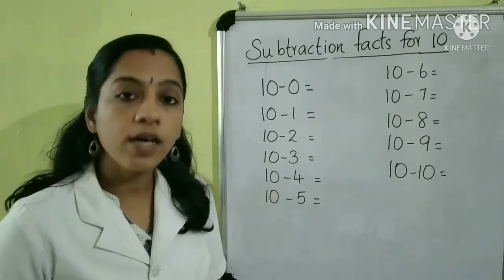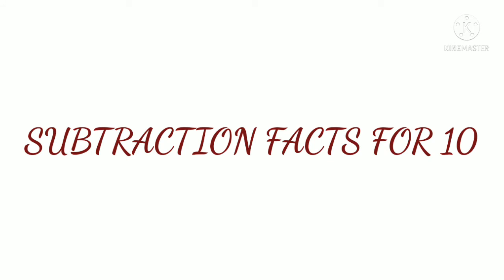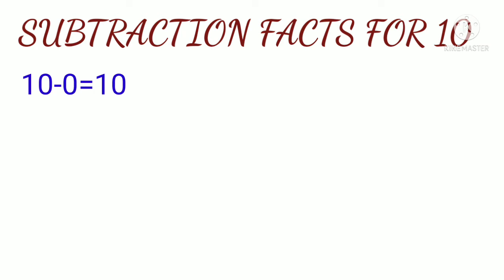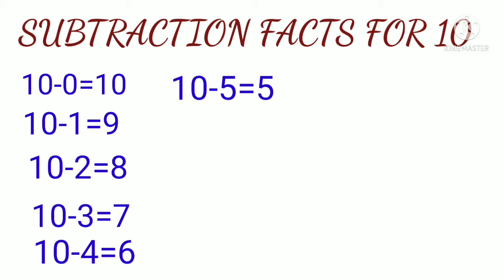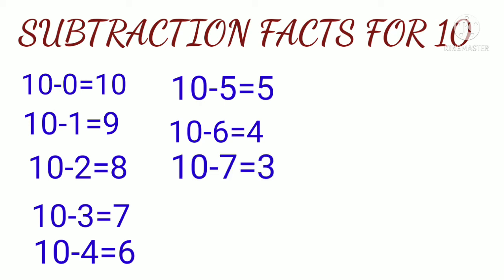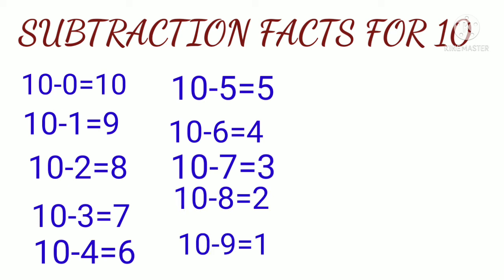Next, we are going to learn the subtraction facts for the number 10. For finding the subtraction facts, we subtract some numbers from the given number 10. The facts are: 10 minus 0 is equal to 10; 10 minus 1 is equal to 9; 10 minus 2 is equal to 8; 10 minus 3 is equal to 7; 10 minus 4 is equal to 6; 10 minus 5 is equal to 5; 10 minus 6 is equal to 4; 10 minus 7 is equal to 3; 10 minus 8 is equal to 2; 10 minus 9 is equal to 1; 10 minus 10 is equal to 0. These are the subtraction facts for 10.